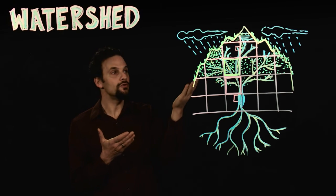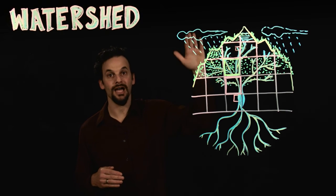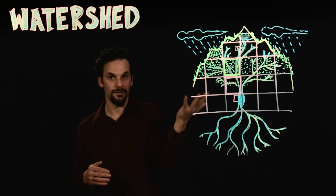So when we remove the vegetation, we change the duration it takes for the water to get from the top of the watershed to the bottom of the watershed.